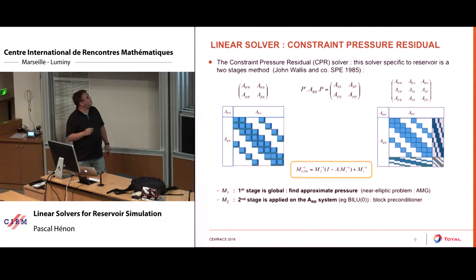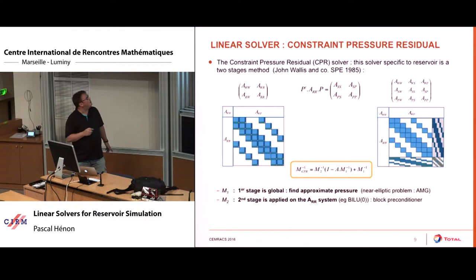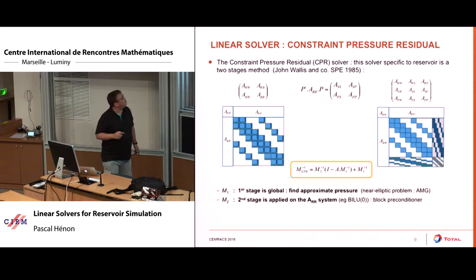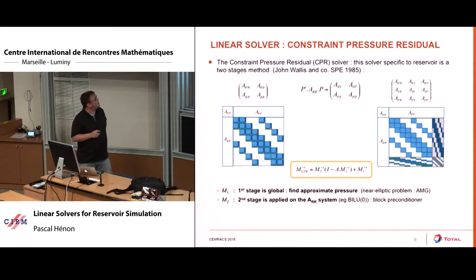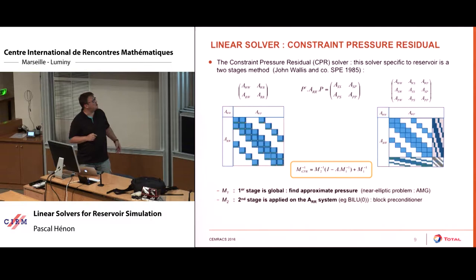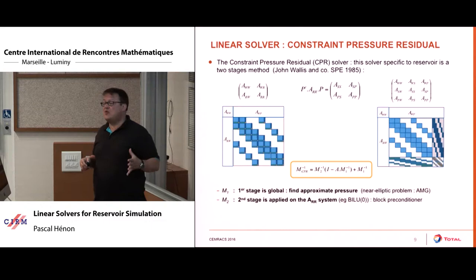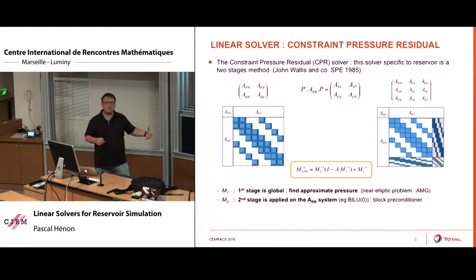This part concerns the reservoir grid, and here you have a coupling with the wells equations. Usually what you have depends on the complexity of the network — if you have a surface network connecting the wells it can be complex, but if you don't have a surface network, it's just a diagonal. The wells go through many cells, connecting many cells from the reservoir grid. The specificity of the reservoir systems is that they combine an elliptic part from the pressure unknowns with some transport from the saturation unknowns. The reference linear method used since 1980 is called CPR — constraint pressure residual — which tries to separate the elliptic part from the transport part.